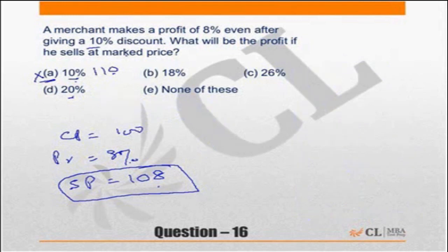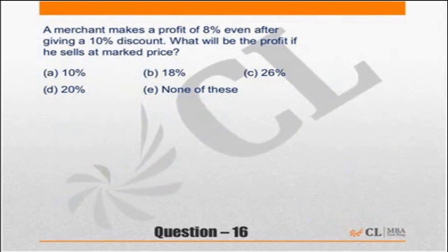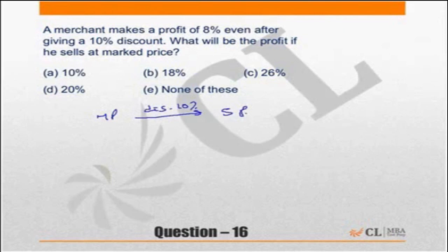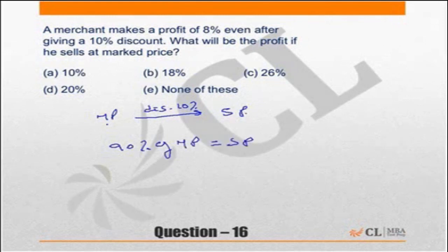How did I get 90%? On the mark price, there is a discount of 10% to get the selling price. A discount of 10% means you are left with 90% of the mark price. In other words, you are selling it at 90% of the mark price, which is the selling price. So: 90% of mark price equals selling price.